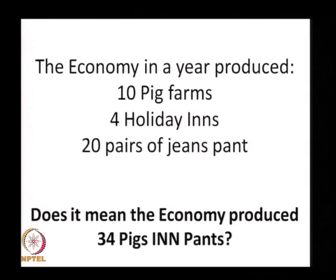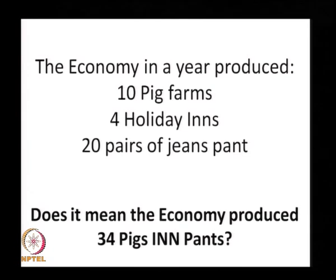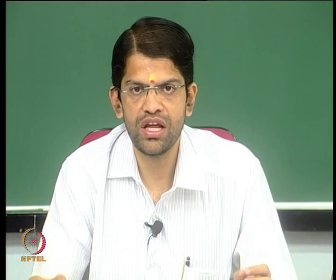Does it mean that at the end of the year the economy produced 34 units? No, it is not. It is not just a mere collation and aggregation of all the economic activities into one big sum that signifies the nation's output. So what do we do next? How do we find the nation's output in an accepted quantifiable form?